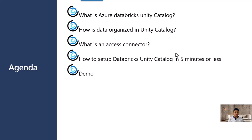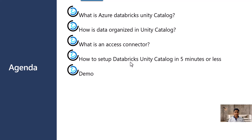These are the agenda items for today's topic. First, we are going to learn what is Azure Databricks Unity Catalog. Then we will learn how data is organized in the Unity Catalog. Then there is a new concept called Access Connector — we will understand how it works. And finally, we will jump to the steps involved in setting up the Unity Catalog.